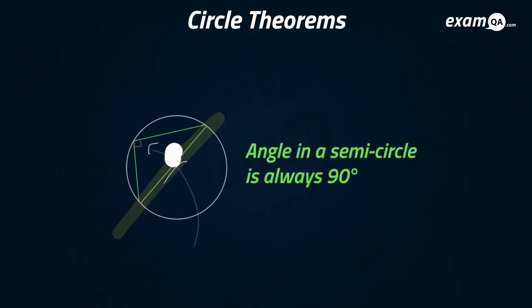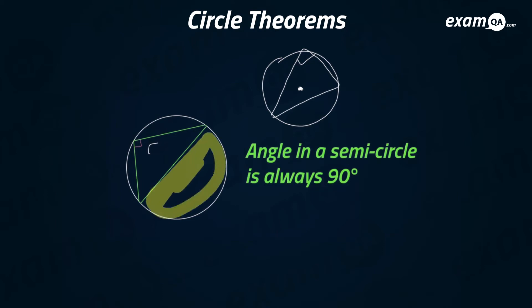They might trick you and draw something like this, and then you might think oh that's 90 degrees. Well it's not, because if the center was here, that's not a semicircle. A semicircle is basically when the circle split up into two halves.